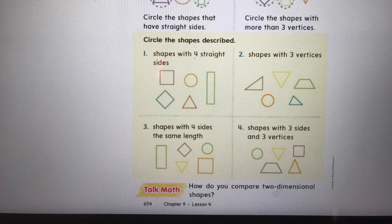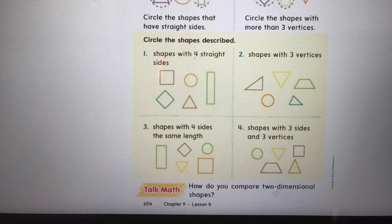So we're going to compare in different ways. Let's look at problem one. Problem one says, shapes with four straight sides. Well, I see a square, a diamond, a triangle, and a rectangle, and all of those have really straight sides. It doesn't matter if they're horizontal or vertical, but they do have straight sides. So I'm going to circle those four shapes.